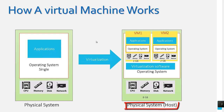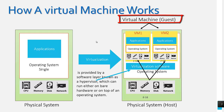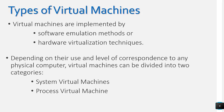The physical system is known as the host and the virtual machines that are created are known as the guests. This virtualization software is known as the hypervisor. Virtual machines can be implemented by two methods: one is the software emulation method, and the second is the hardware virtualization technique.